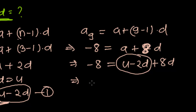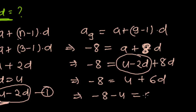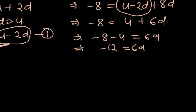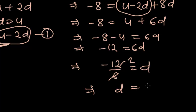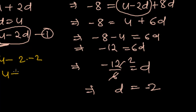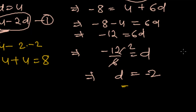So taking terms across: negative 8 minus 4 equals 6D, giving negative 12 equals 6D, and therefore D equals negative 12 divided by 6, so D equals negative 2. Therefore, A equals 4 minus 2 times negative 2, which is 4 plus 4 equals 8. So the first term A is 8 and the common difference D is negative 2.